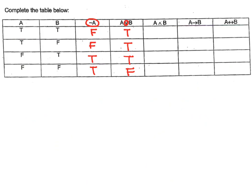Now A AND B means both of them have to be true. That's the only case — true and true. All other combinations have at least one false, so only the first one is true and the rest are all false. A implies B: true to true is true, true to false is the only case where the conditional statement is false, and false to true and false to false are both true.